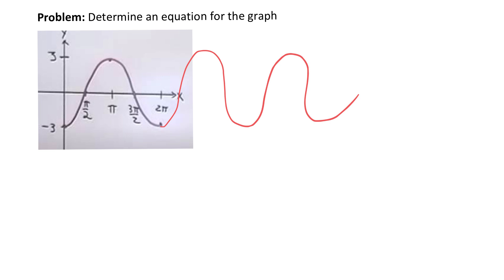Is it sine or is it cosine? And what are the values? What's the amplitude — the a value? What about the period? What about the horizontal translation and vertical translation? We want to figure out all these values. I think it's relatively simple to find the a value — the value that would go in front. So if you had y equals a times your trig function, the a would be the amplitude or the vertical stretch.